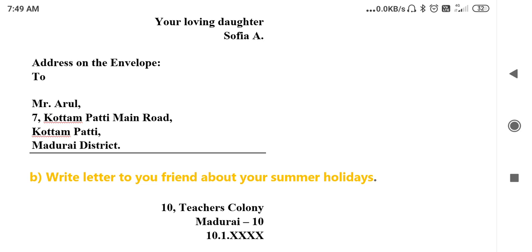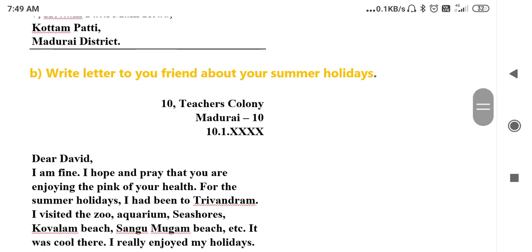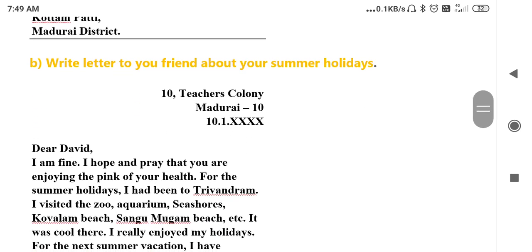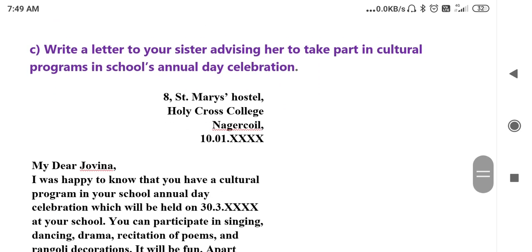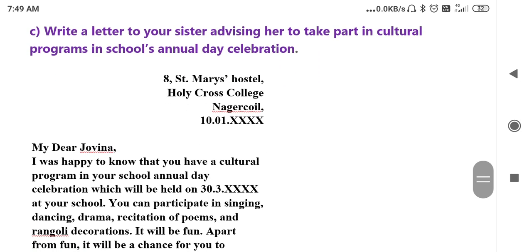Next, number two: write a letter to your friend about your summer holidays — how you enjoyed your summer holidays. And number three is: write a letter to your sister advising her to take part in cultural programs in the school's annual day celebration.